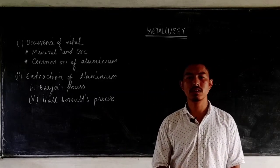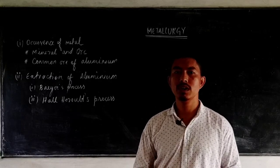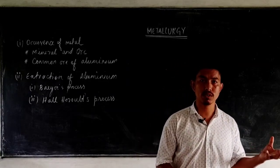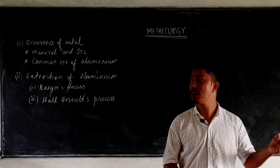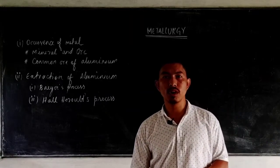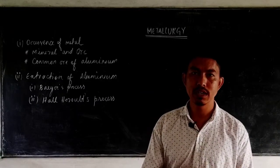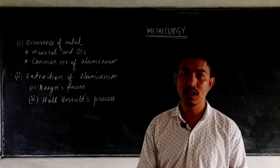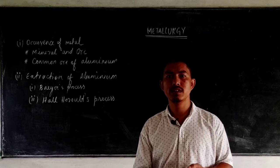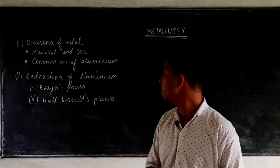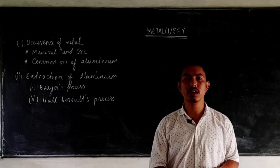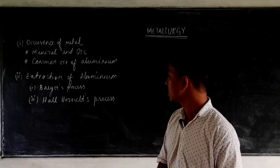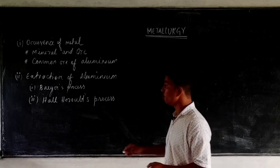For most metals, they occur in a combined state, either with a sulfide, with carbonates, or with oxides. In order to obtain a metal from those compounds or combined form, the processes involved may include grinding, filtration, roasting, reduction, calcination, and many more. Here we will be discussing only three important topics: minerals and ores.